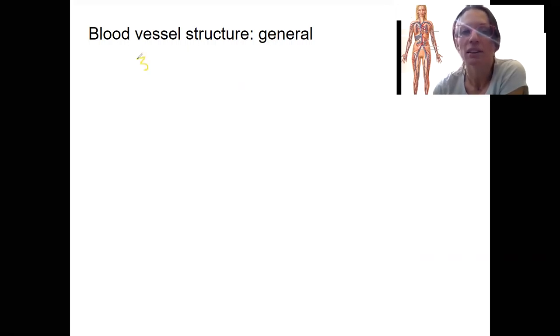So first, there are three layers that we're going to look at. These are called tunics. So tunics refer to layers. The outside one is going to be the tunica, something you could think of maybe externa, outside.